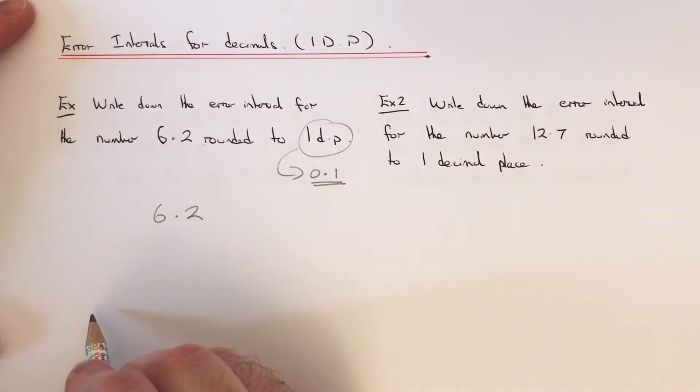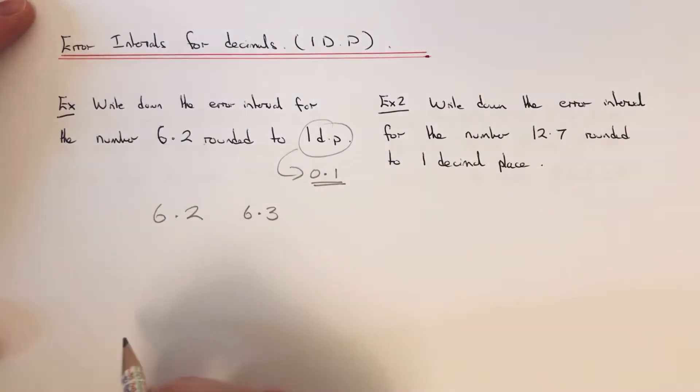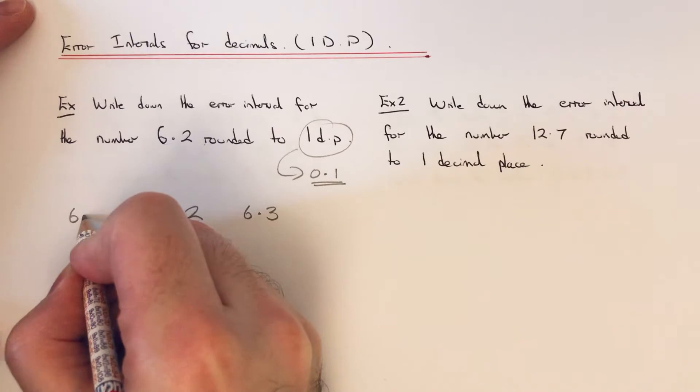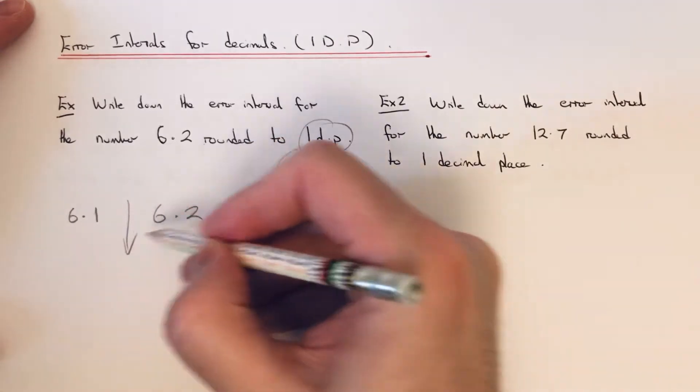So what I'm going to do then is just write 6.2 down in the center of my page and I'm going to write down the number above 6.2 on my scale which was 6.3, so I've just added 0.1 onto 6.2. And the number before 6.2 on the scale was 6.1, so again I've just taken 0.1 off.